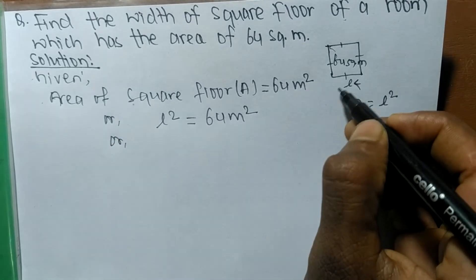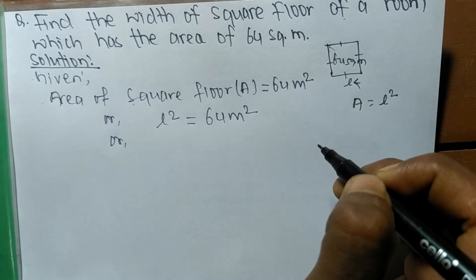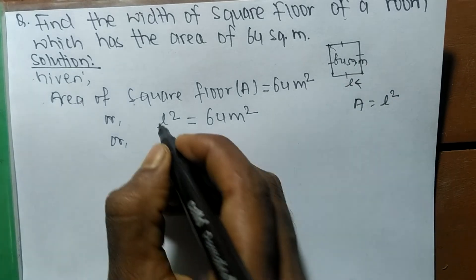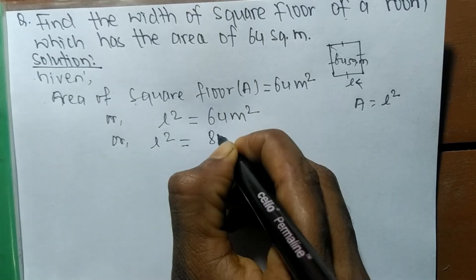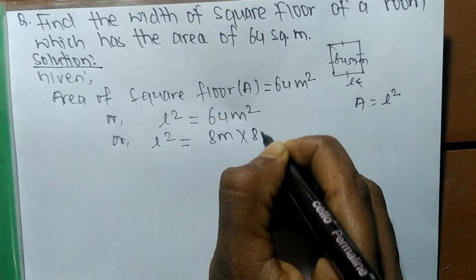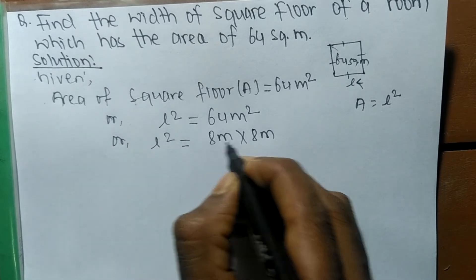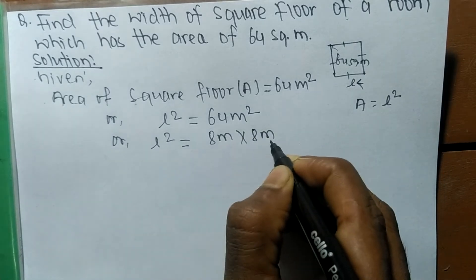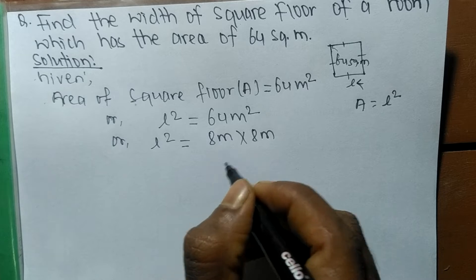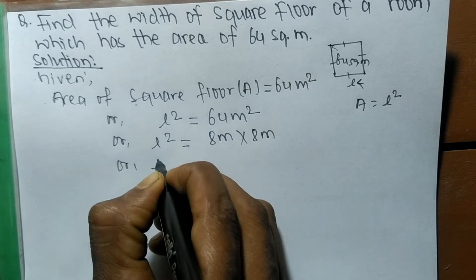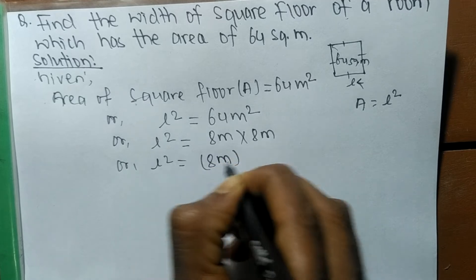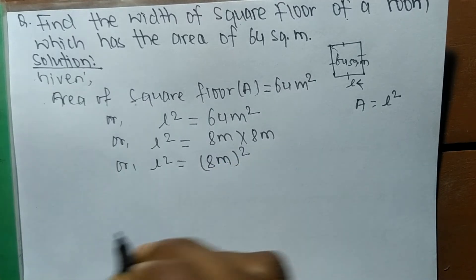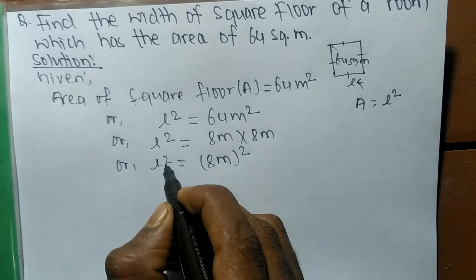So L² = 64 means it is 8 meter times 8 meter. So 8 times 8 is 64, meter times meter means meter square. So now here is also square, so here is also square.